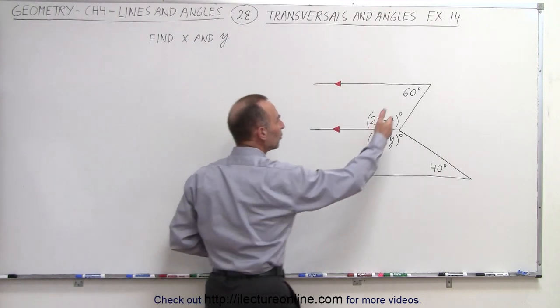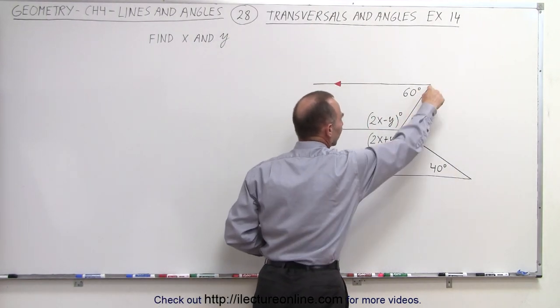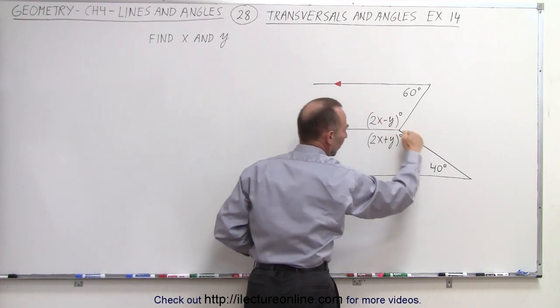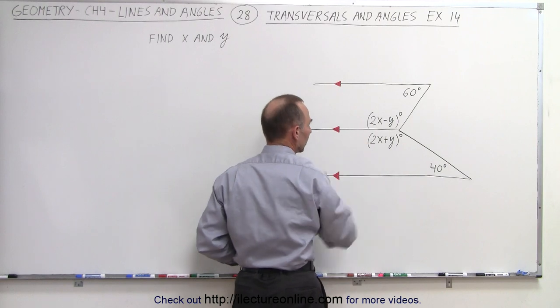We have two lines, one going this way and one going this way, which means that this line acts as a transversal for those two parallel lines, and this line here acts as a transversal for those two parallel lines.